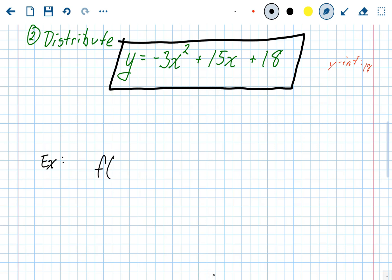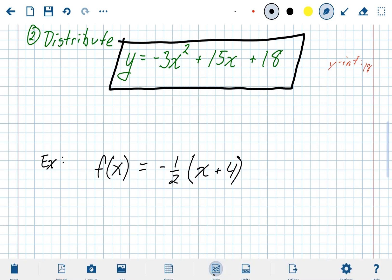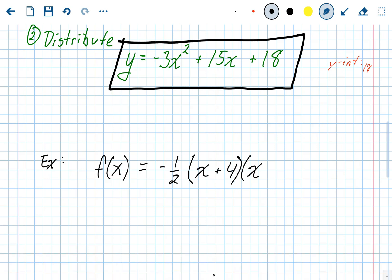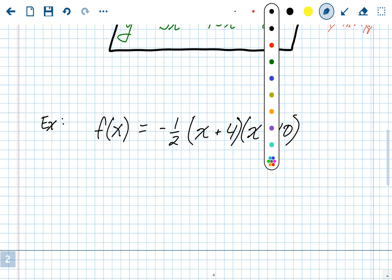So we have F of X. Again, F of X and Y are interchangeable. Let's do F of X equals negative 1 half, X plus 4 times X plus 10. Now again, two quick steps. Foil, distribute, and then you're done.